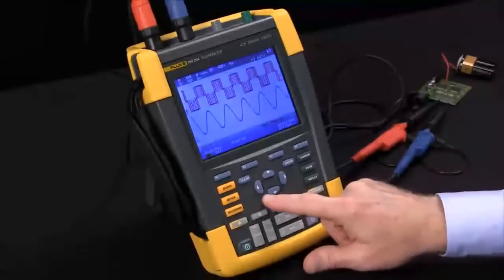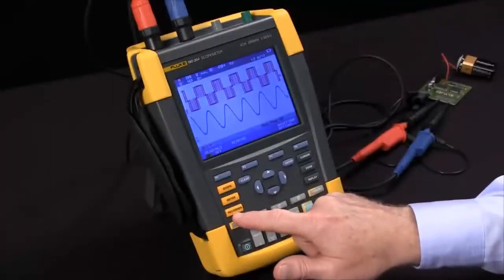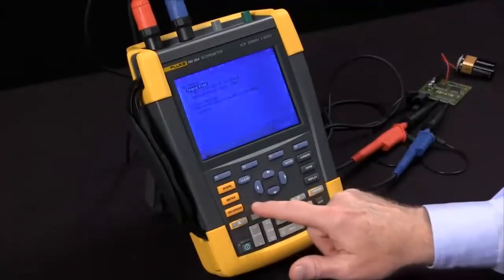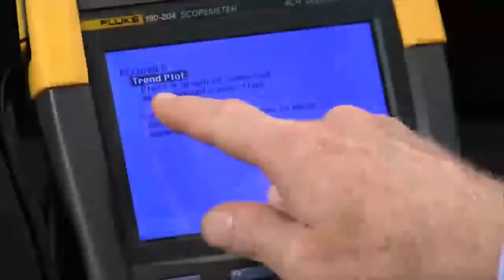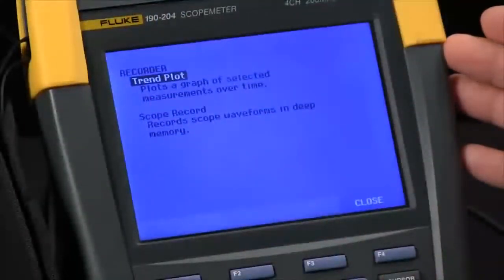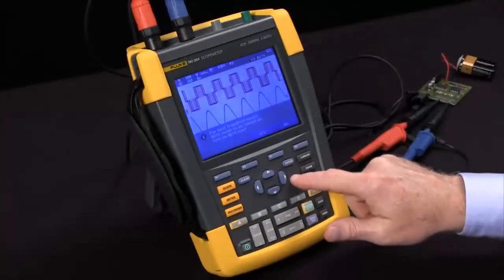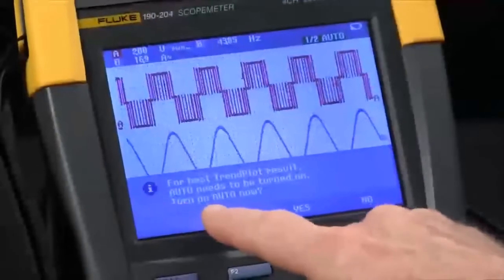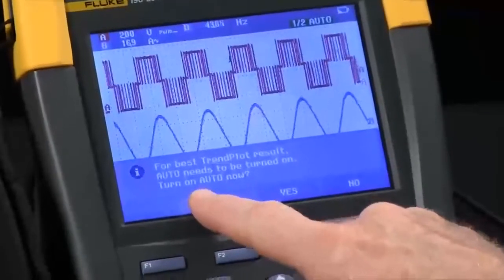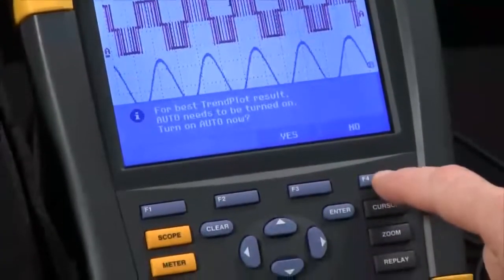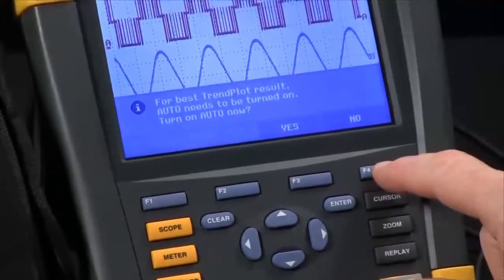We're ready to start a recording. We'll hit the recorder button for that. Trend plot. We'll take those readings that we had highlighted and trend them. We'll simply hit the enter key. We'll choose not to have the auto reset or control our gain. So we'll say no with F4. Yes might be a good option, but we'll say no.